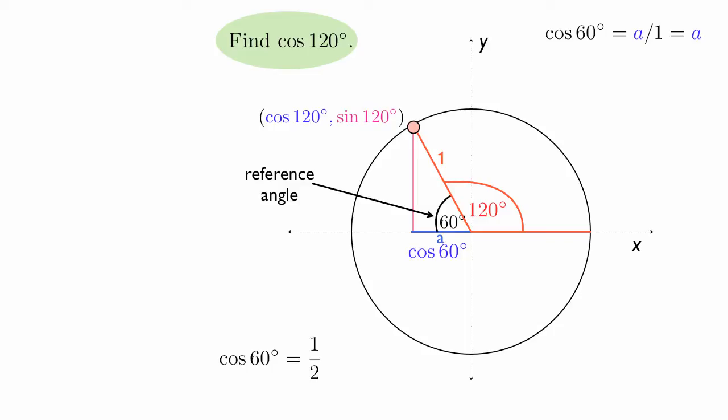The cosine of 60 degrees, you should know or you should memorize, is 1/2. So we know that after we get rid of those other labelings, the length of that blue side is 1/2.